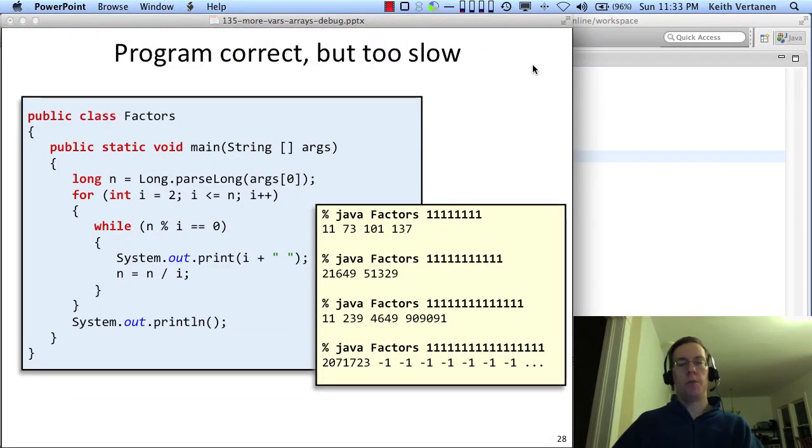But if we run it for larger and larger numbers, it starts taking longer and longer to run. It's producing the correct output, but it's taking - oh, except for this one. What's going on here? This is a very big number. It prints out the first factor and then it just prints out negative 1 forever. So what the heck's going on there? This has something to do with the size of the data type. The long n can store a very big integer, but we're using an int variable in this for loop. And that integer variable can't store as big of an integer as the long. And so eventually the integer i kind of gets broken because it gets too big.